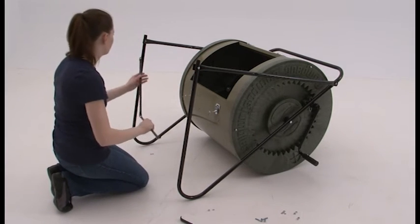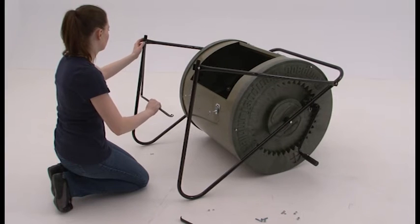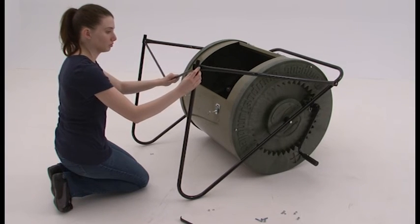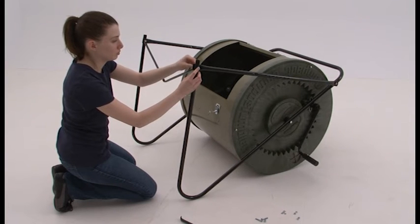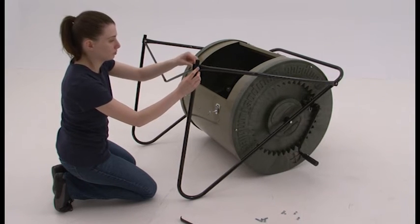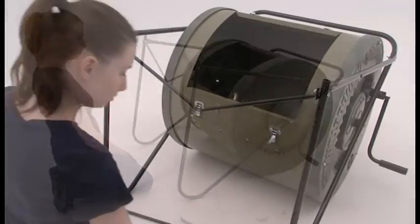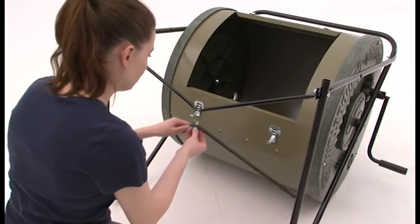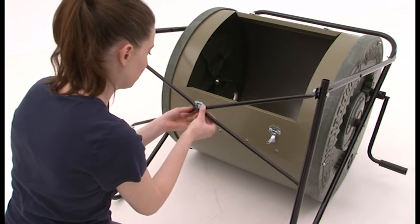Next, place one brace onto the bolts and fasten them with the lock washers and nuts. Attach the second brace to the first brace with the 1 1⁄4 by 3 1⁄4 inch bolt, lock washer and nut.